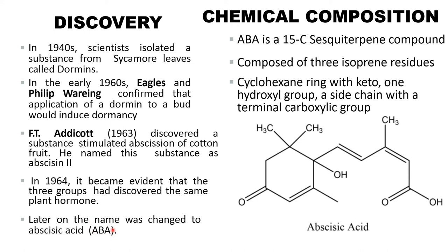It is also represented as ABA. Chemical composition of abscisic acid: abscisic acid is a 15-carbon sesquiterpene compound. It is composed of three isoprene residues, a cyclohexane ring with a keto group, one hydroxyl group, and a side chain.